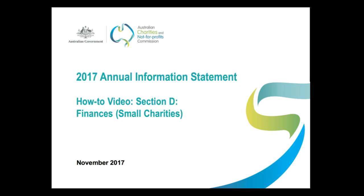Hi and welcome. This video is designed to help small charities fill in Section D of their 2017 Annual Information Statement. Your answers to questions in this section will appear on the public ACNC register, unless the ACNC has approved a request from you that specific details be withheld from public view, so it's important that you get these questions right. Completion of this section is optional for basic religious charities and non-government schools.